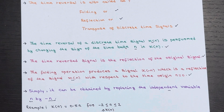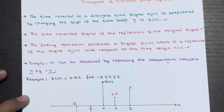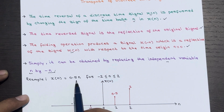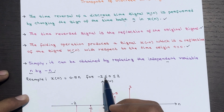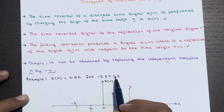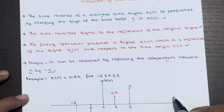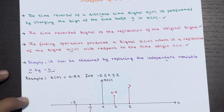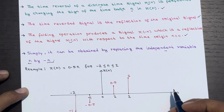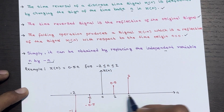To put it simply, we obtain the time reversed version X of minus n by replacing the independent variable n by minus n. Now let's look at an example to better understand this concept. X of n equals 0.5n for n greater than or equal to minus 2 and less than or equal to 2. Let's draw a graph for this signal.